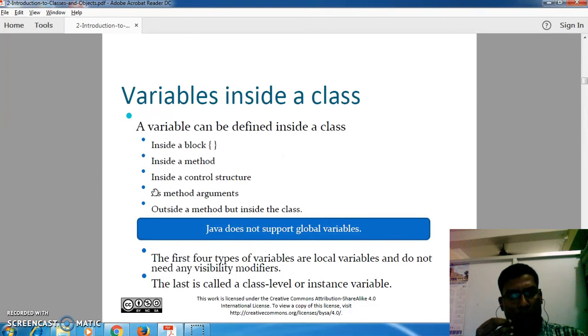Variables in Java can be declared inside a method, in a for statement, as a method argument, outside a method but inside a class. Java does not support global variables - this is an important point. The first four types of variables are local variables and do not need any visibility modifier. The last is called class level or instance variable.